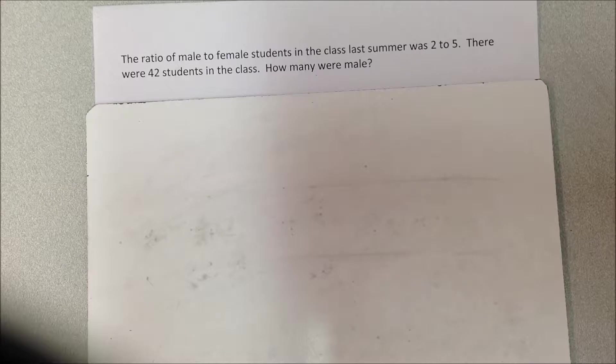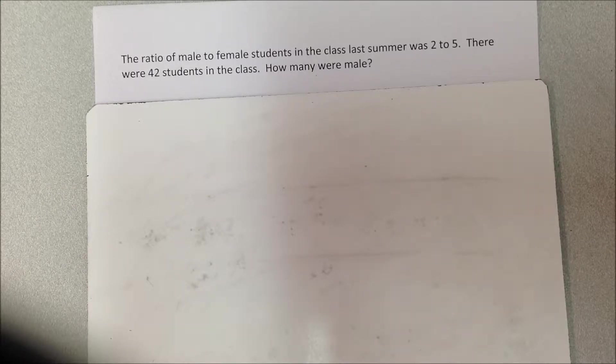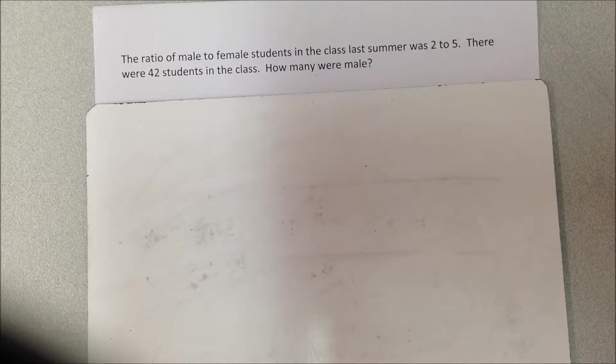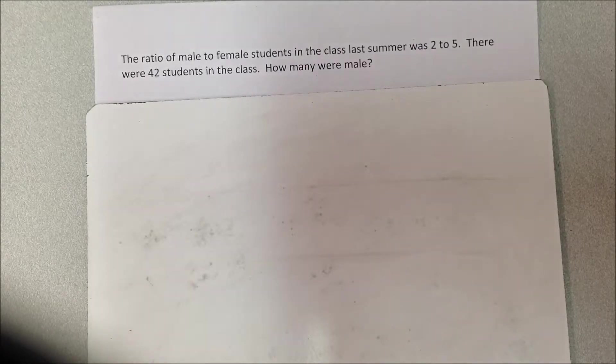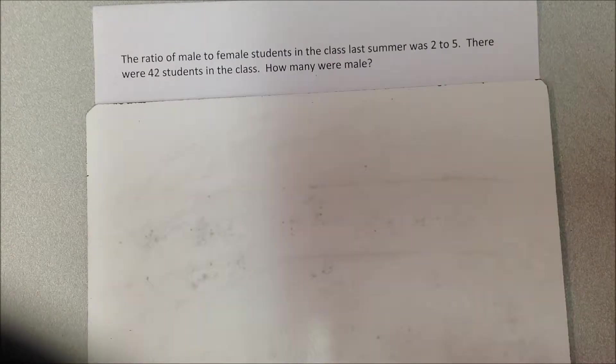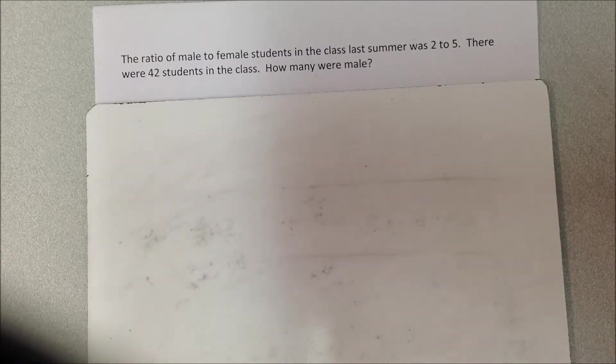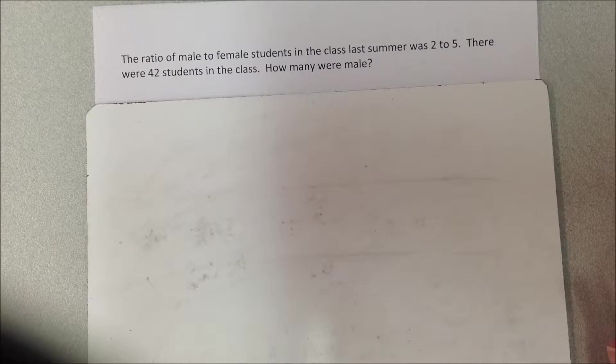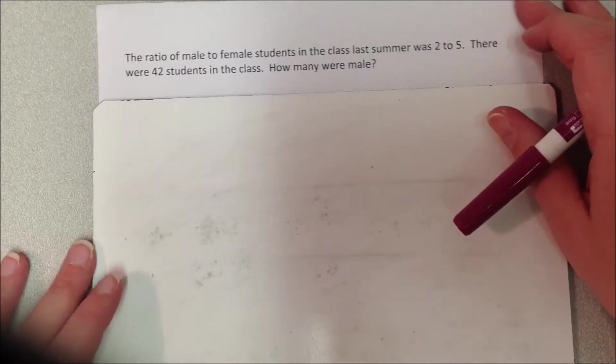Sometimes you might encounter what we call a two-step proportional problem. It's where a ratio relates part of an amount to a whole amount, or sometimes they relate part of the amount to just another part of the amount, and we have to figure out what the whole amount is. Let's do some examples so you can see what those little charts look like.